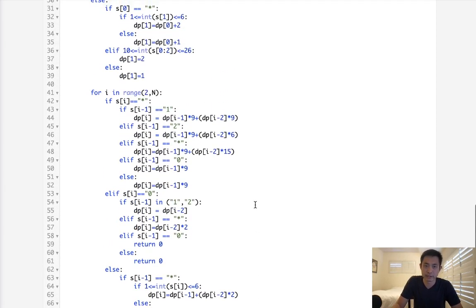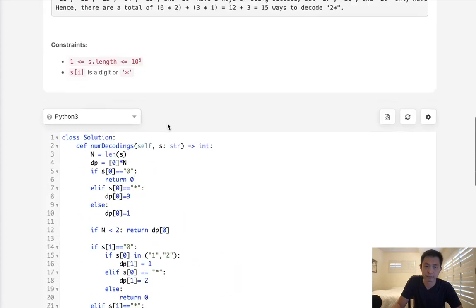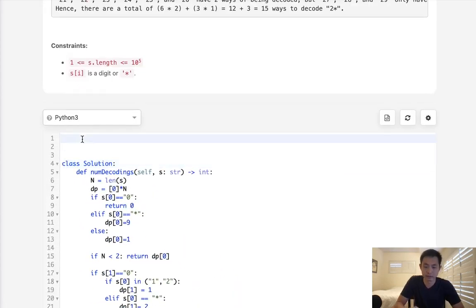Let's look at some of my code and see if we can figure out some insights. One of the things we realize is if it's a star, we basically have to take our number of ways that we've decoded in our DP array. At the very least, there's going to be nine ways we can decode that. So we have to multiply however many ways we decoded here with at least nine.